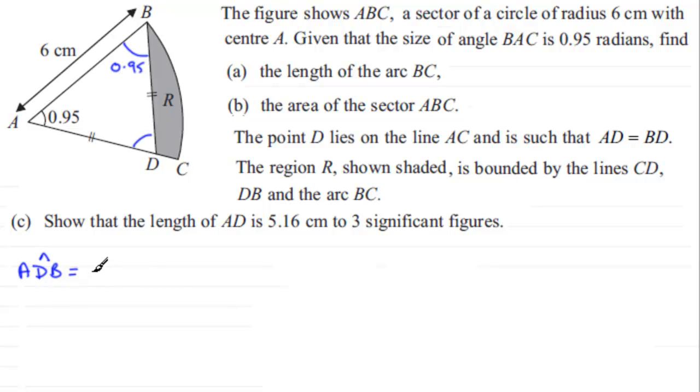So I now have to subtract two lots of 0.95 radians. If we work this out on your calculator, you'll find you get 1.24159 and so on, radians.